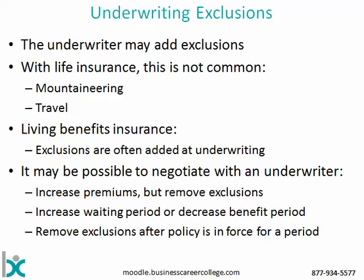And then we have underwriting exclusions. These would not be the same with every policy — these would be added particular to your circumstances. Most life insurance policies will be issued with no extra exclusions. As of mid-2016, we are finding quite a few insurers making heavy use of a mountaineering exclusion as well as a travel exclusion. The mountaineering exclusion covers situations where somebody is killed while rock climbing or engaged in some other mountain-based activity, and it would be added because at the time of underwriting there was some indication that was a likely risk.